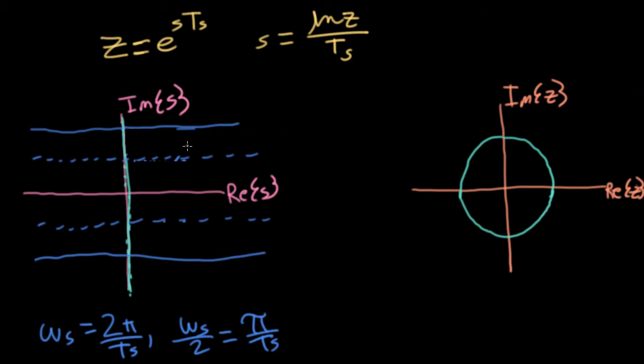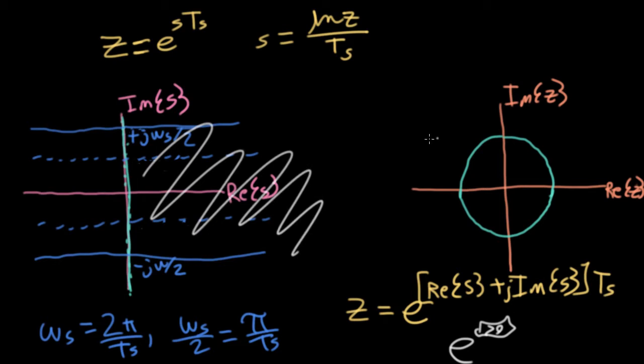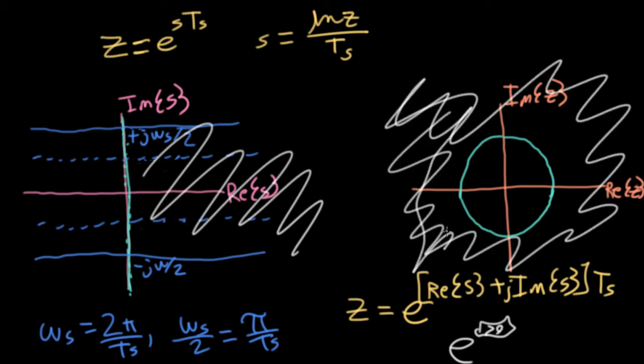And so now I can figure out how points from Laplace land go into Z land by running through this formula. So let's think about what's happening for Z. Z is going to equal e to the real part of s, plus j times the imaginary part of s, all of this times capital Ts. So let's focus for a second on the real part. If the real part of s is bigger than 0, then I'll have e to some positive number, something bigger than 0. So that will give me a number that's bigger than 1. So everything on the right here is going to correspond to magnitudes on the Z plane that are bigger than 1 that are out here.